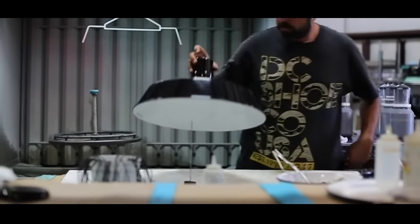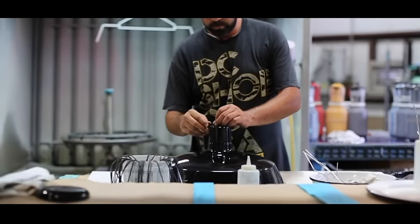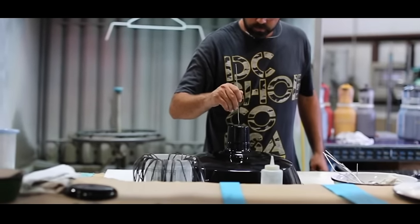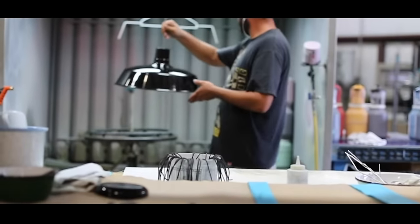Next, porcelain enamel is then sprayed on the exterior of the shade, completely covering the electrostatic ground coat and the shade rotates through the oven once again.